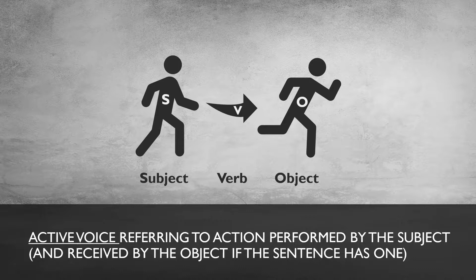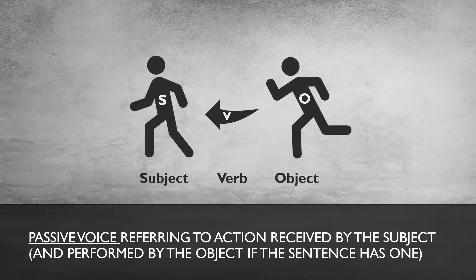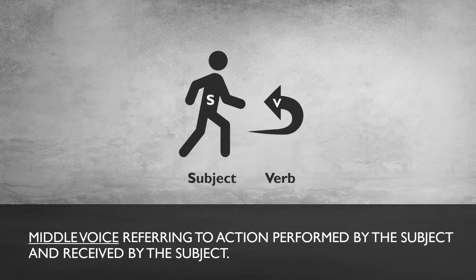Active voice refers to action performed by the subject and received by the object, if the sentence has one. Passive voice refers to action received by the subject and performed by the object, if the sentence has one. Middle voice refers to action performed by the subject and received by the subject, such as in the sentence 'the hiker helps herself out of the ravine,' in which the hiker both performs and receives the action. However, in this video we will be focusing on active and passive voice, not on middle voice.